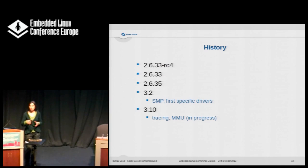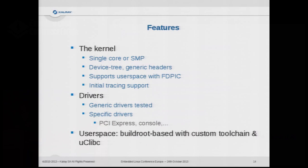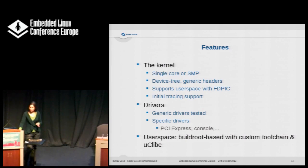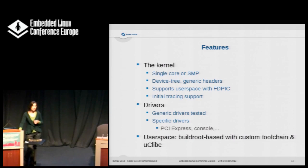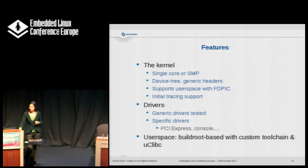Then we moved to 3.10, which is the version we are currently using. At 3.10 we added tracing support and the MMU. Our kernel can run on a single core or in SMP mode. We are running device trees from the beginning and using generic headers when possible. That was pretty easy for us, since the port was started when all this infrastructure was already present.